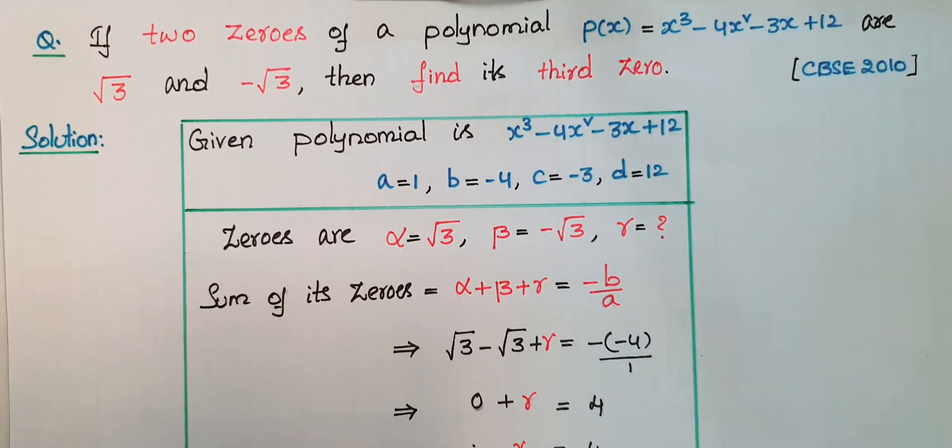Hello everyone. Today I am going to solve this problem: If two zeros of a polynomial p(x) = x³ - 4x² - 3x + 12 are √3 and -√3, then find the third zero.